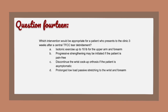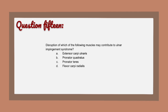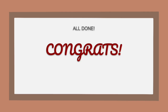Question 14 options: A) Isotonic exercise up to 10 pounds for the upper arm and forearm. B) Progressive strengthening may be initiated if the patient is pain-free. C) Discontinue the wrist cock-up orthosis if the patient is asymptomatic. D) Prolonged low-load passive stretch to the wrist and forearm. Question 15: Disruption of which of the following muscles may contribute to ulnar impingement syndrome? A) Extensor carpi ulnaris, B) Pronator quadratus, C) Pronator teres, D) Flexor carpi radialis.